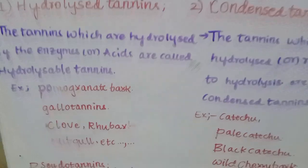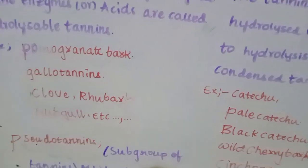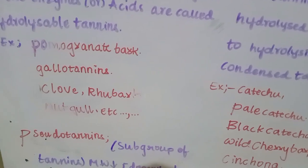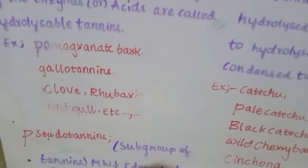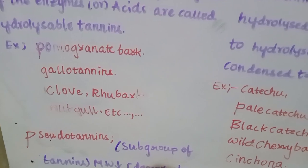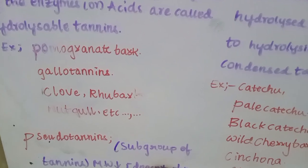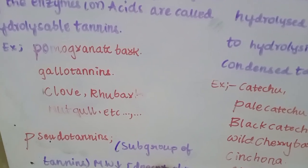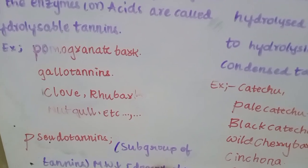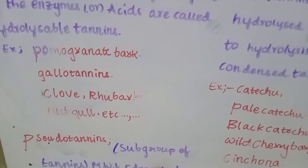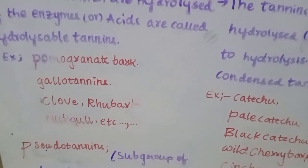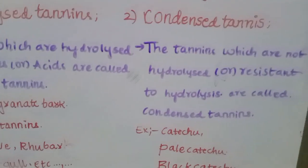Examples of hydrolyzable tannins are pomegranate bark, gallotannins, clove, rhubarb, and nutgall.